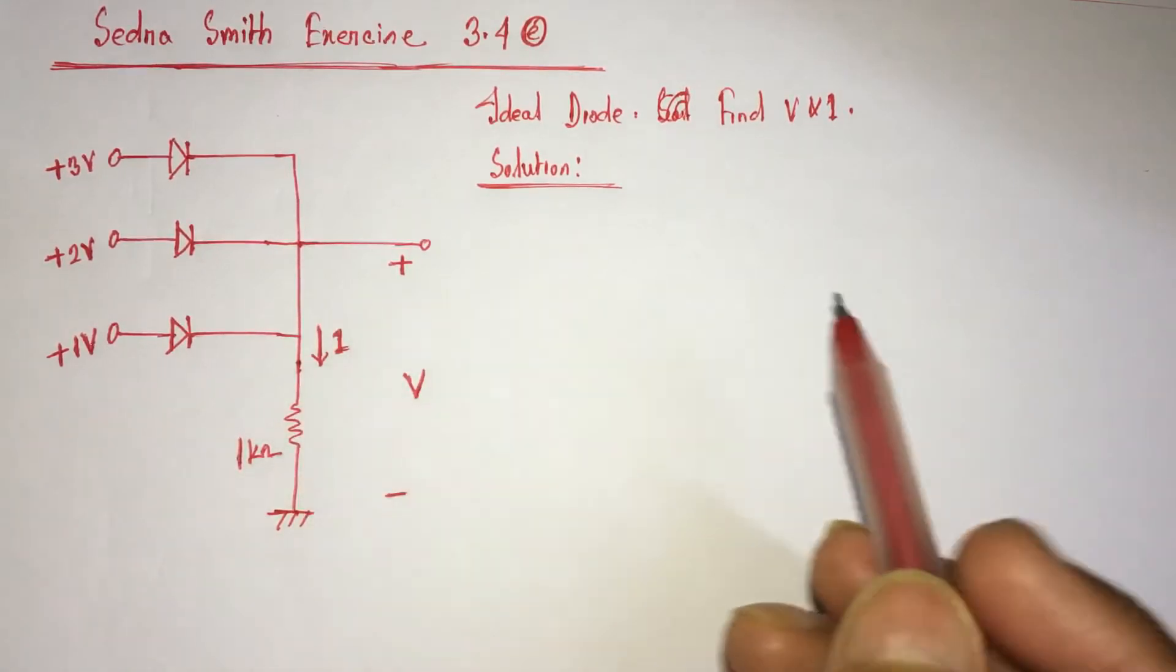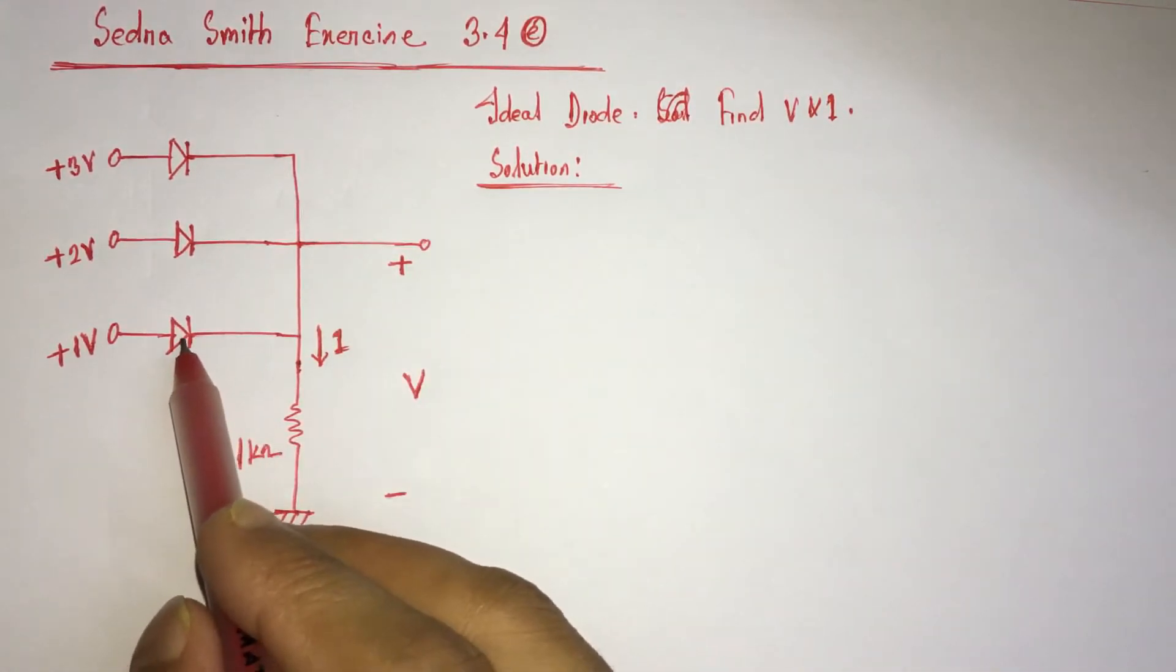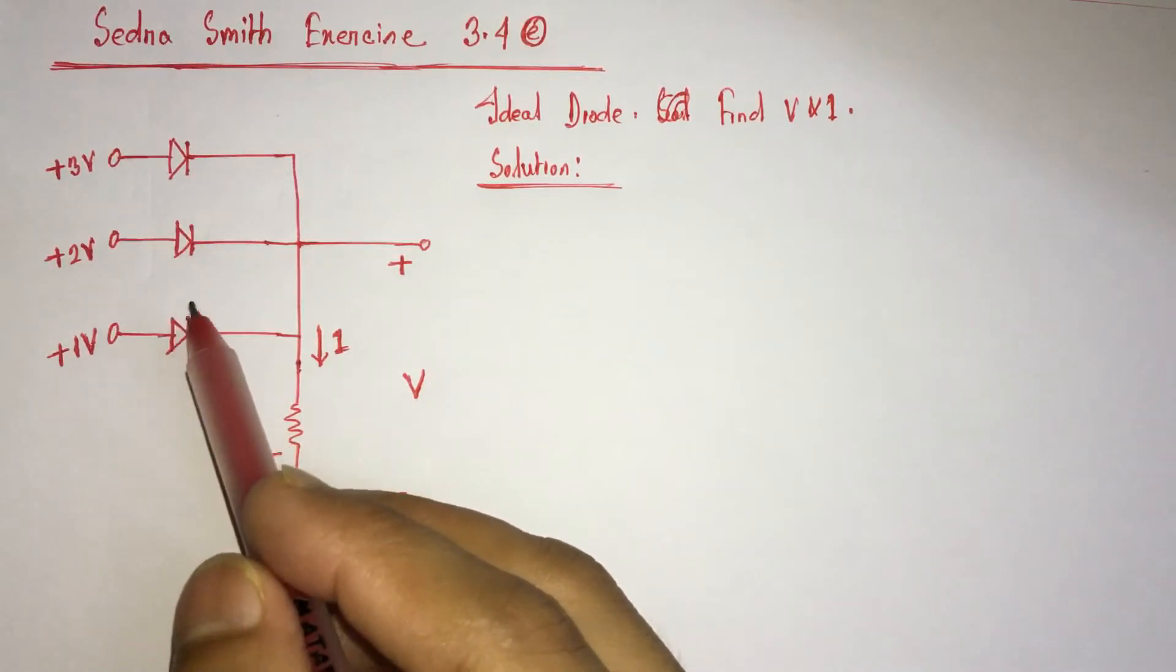For solving diode related problems, the first stage is to identify the state of diode, either the diode is conducting or not.